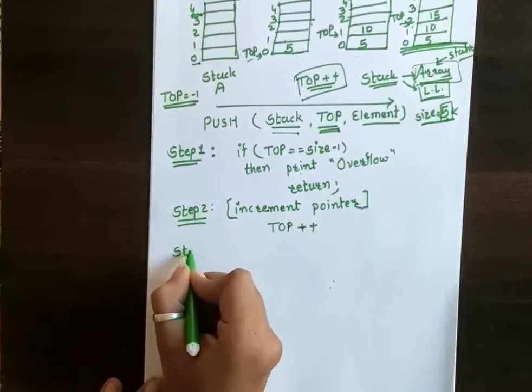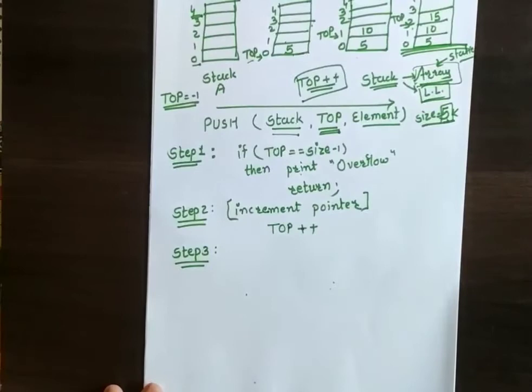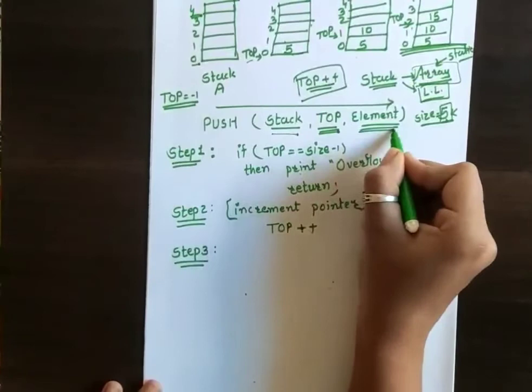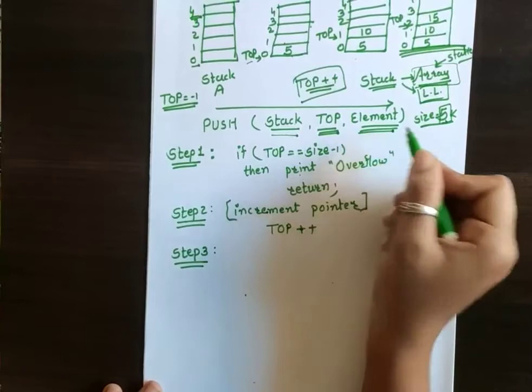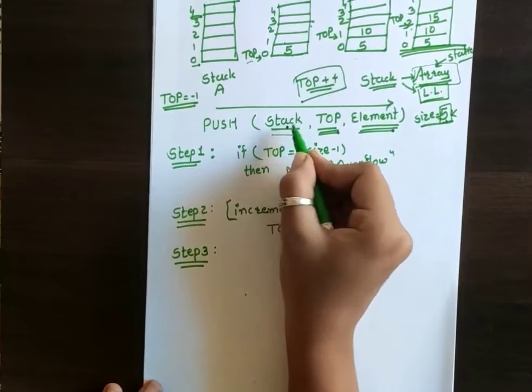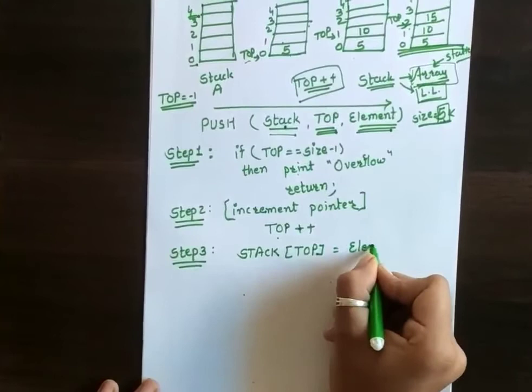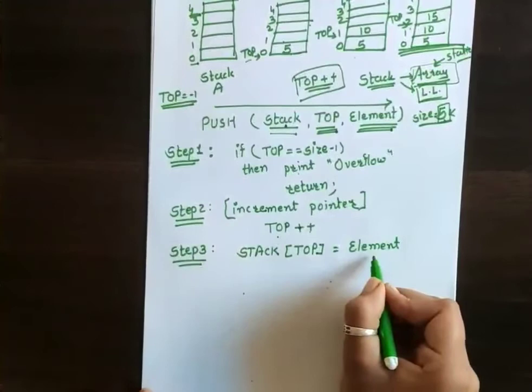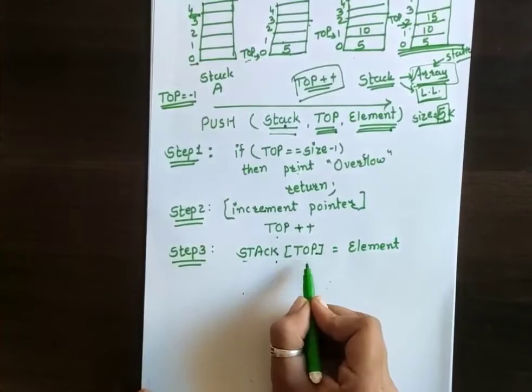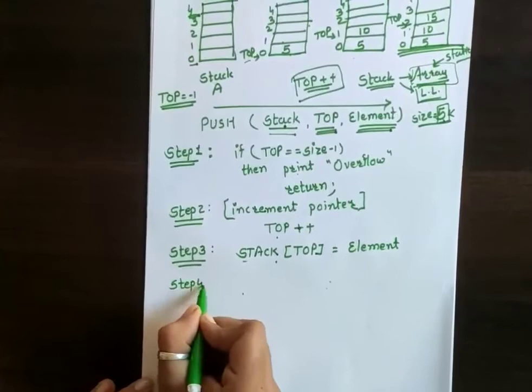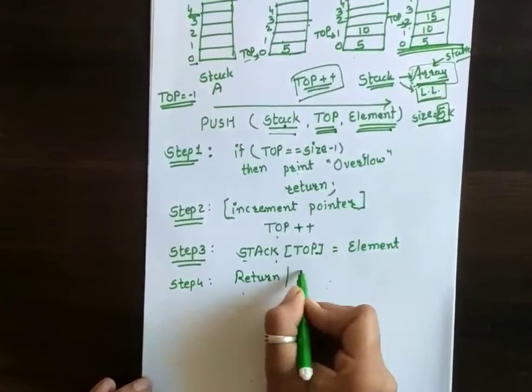After incrementing the top, the next step is I need to store the particular element given by the user: stack[top] = element. That means I am storing the element into my array called stack at the index top. And that's all — nothing more. The last step, Step 4, is either return from that function or end. That completes the push algorithm.